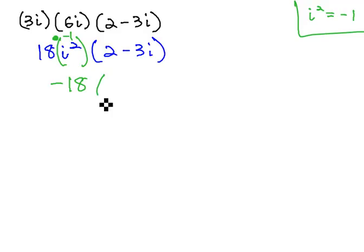That's our result from multiplying the first two together. Now, we're ready to multiply by the last binomial, simply by distributing that negative 18 through the parentheses.